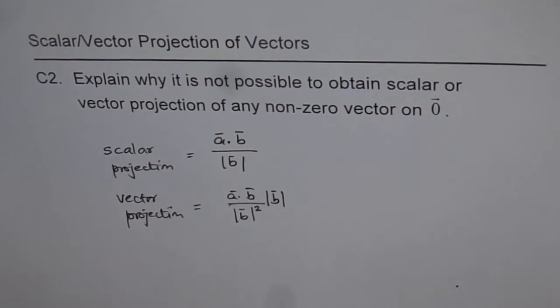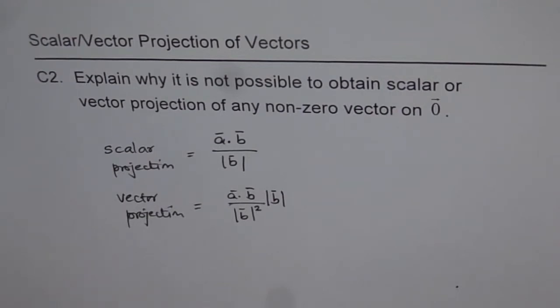And second thing is, after all what is a zero vector? A zero vector has zero dimensions. Magnitude is zero, that means, but undefined direction. Since its direction is undefined, we cannot really have a vector projection on it.